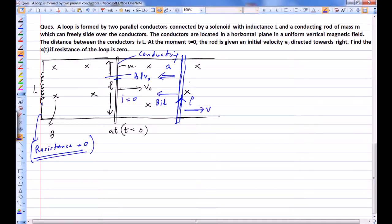What is happening in this instant? This is a cell of EMF BLV. If I put KVL in this particular loop, BLV should be equal to L dI/dt.